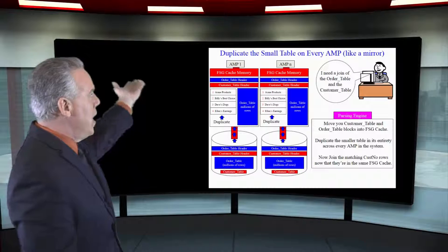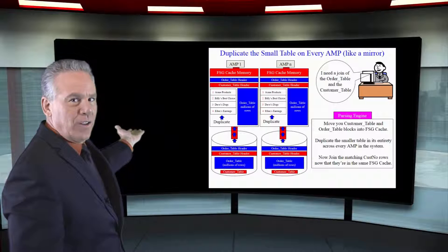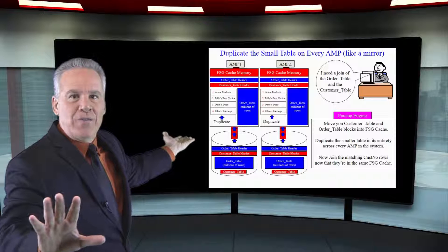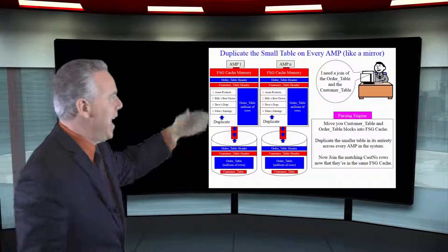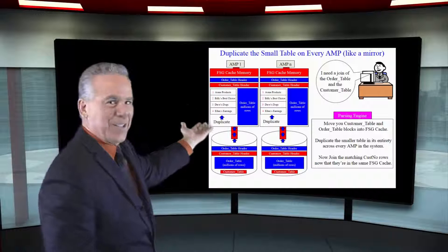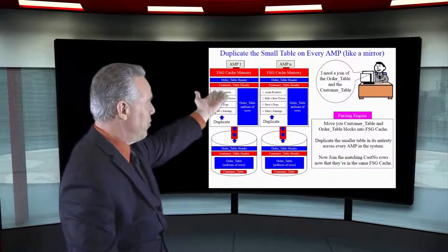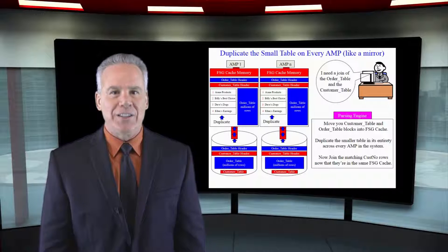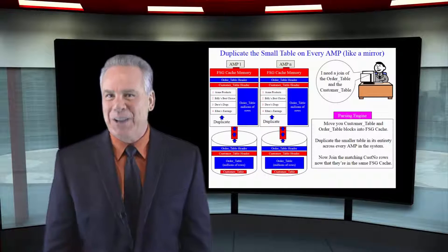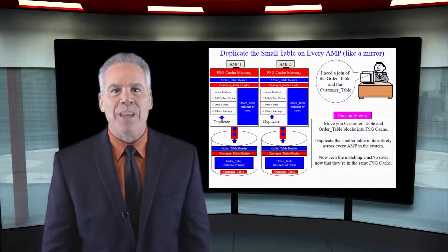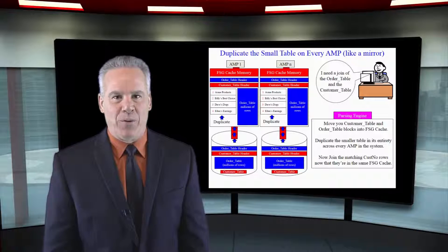And as you can see in amp one, there's my four customers. The rows it held for the order table didn't have to move across the binet. And it's the same with each and every amp. The four customers are there, the millions of rows. We only have four customers, but those four customers have placed a ton of orders. And that's how you join together in a big table, small table scenario.